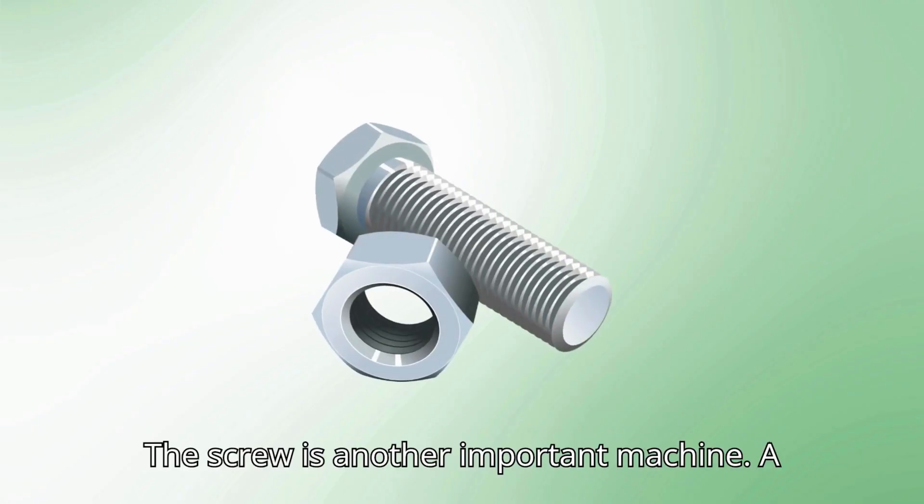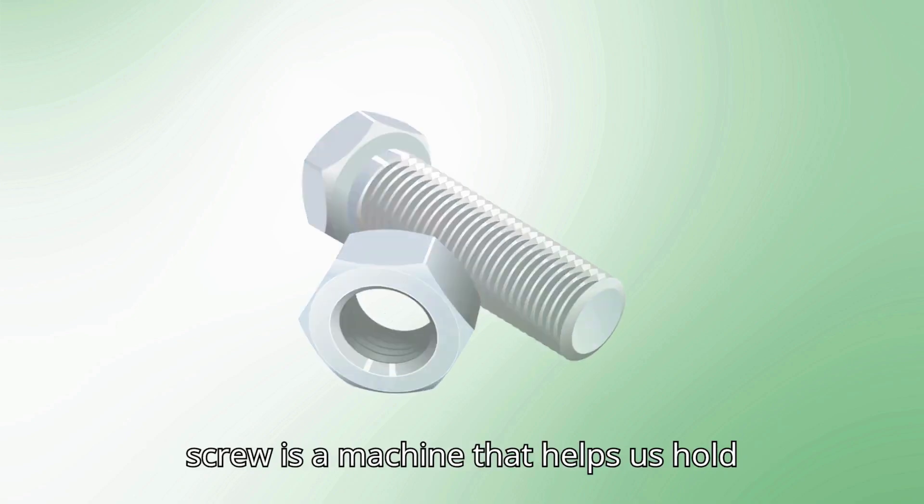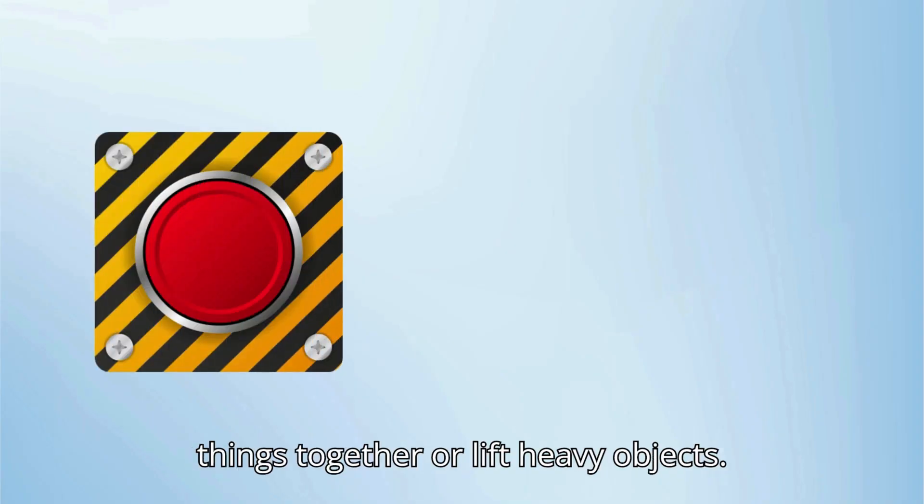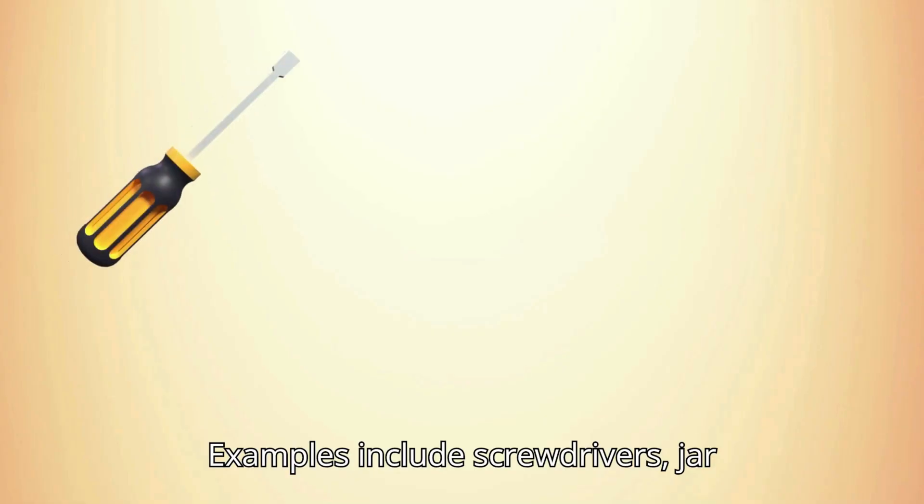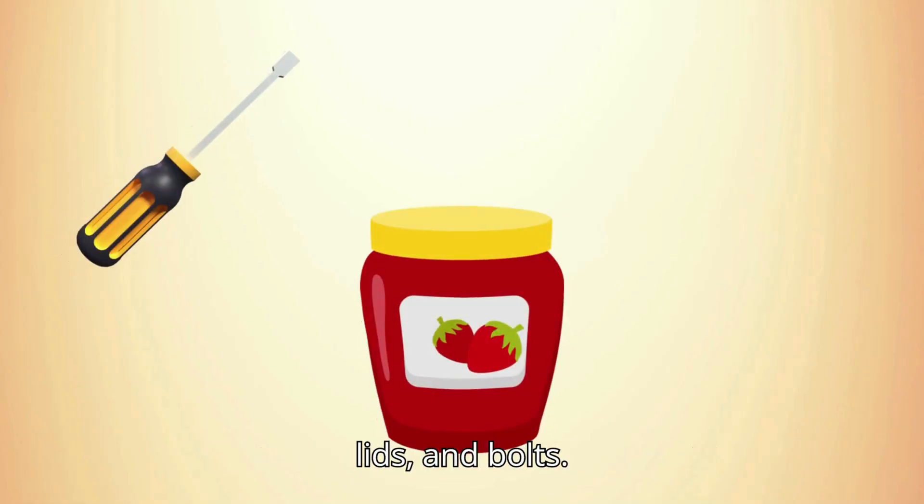The screw is another important machine. A screw is a machine that helps us hold things together or lift heavy objects. Examples include screwdrivers, jar lids, and bolts.